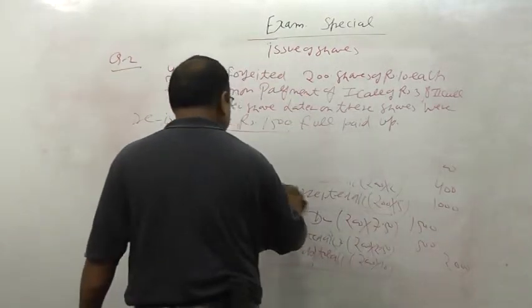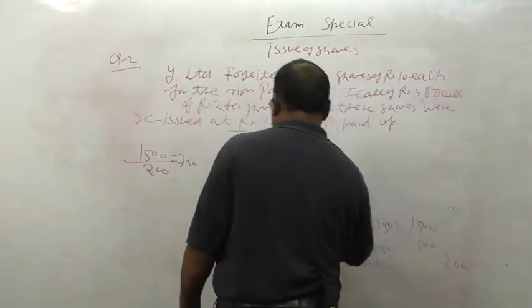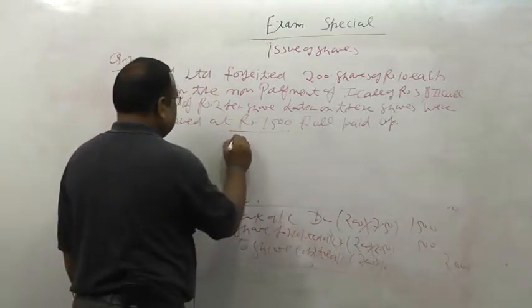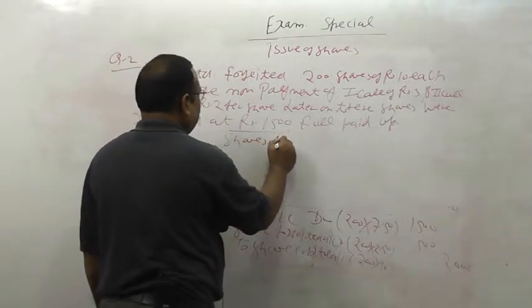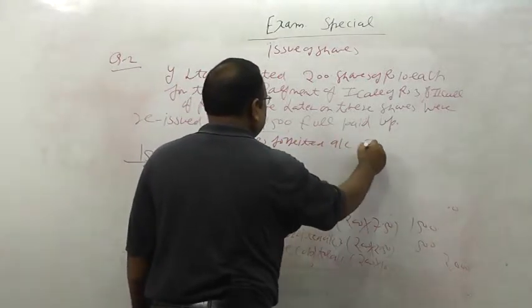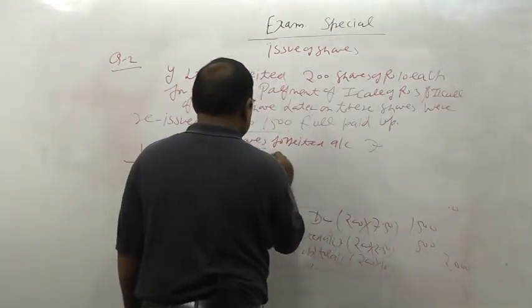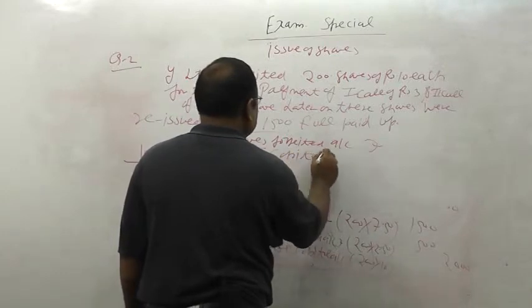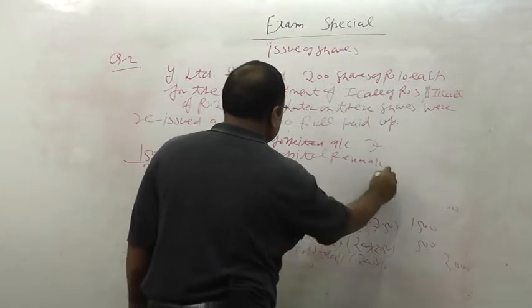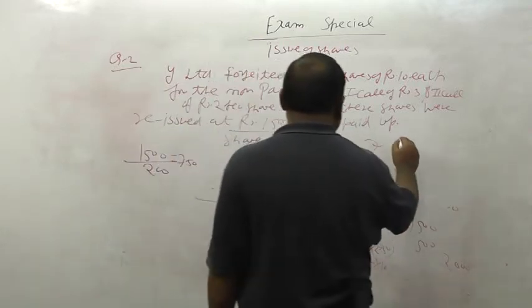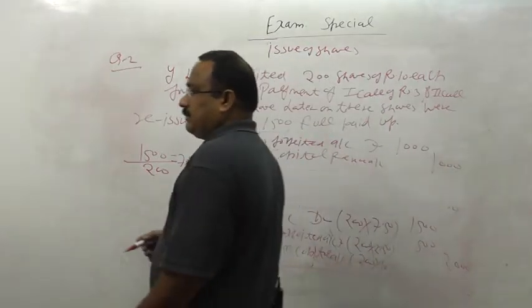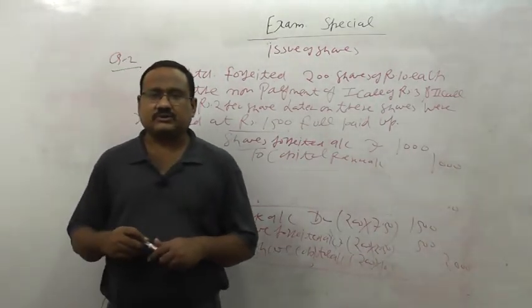Third entry will be share forfeited account debit to capital reserve account. 1000 forfeited, 500 discount given, remaining 500 to capital reserve. This is a simple question. The question is quite easy.